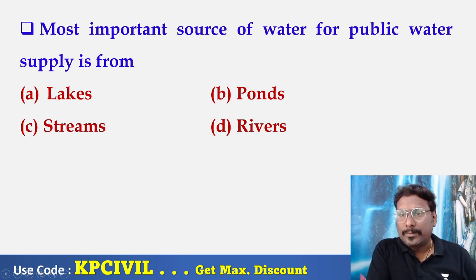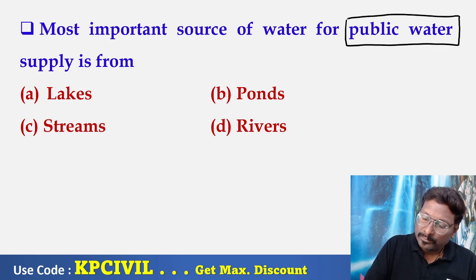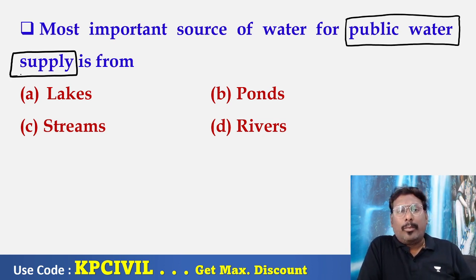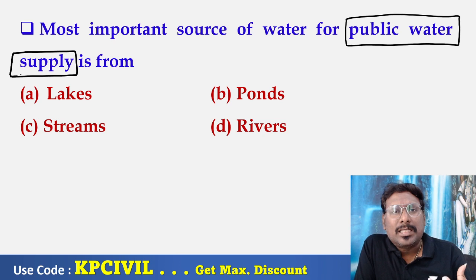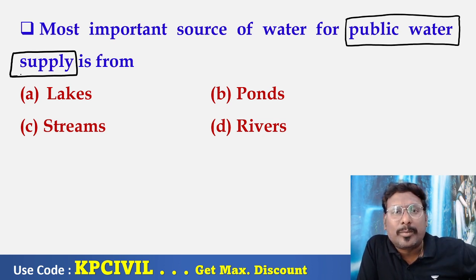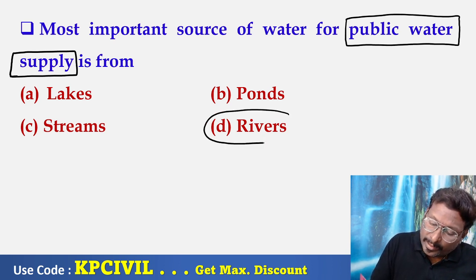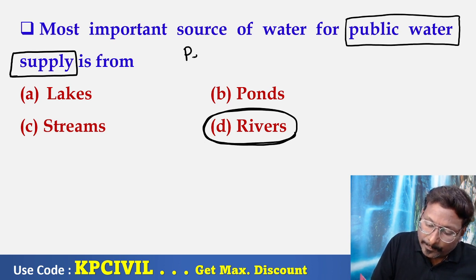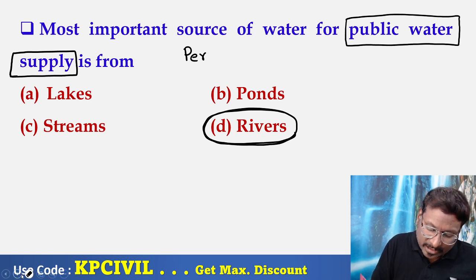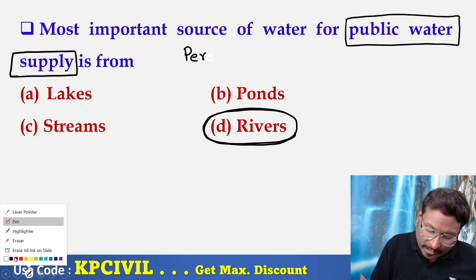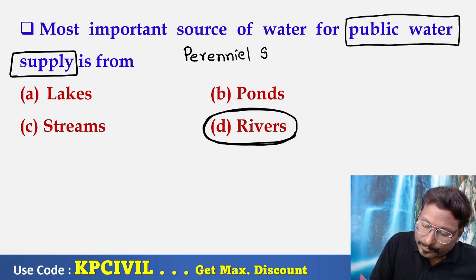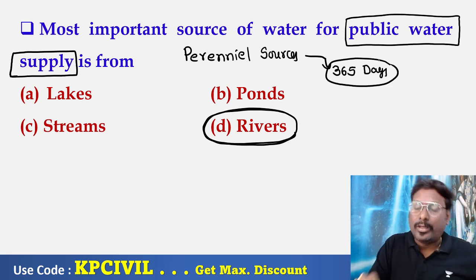The most important source of water for public water supply — public water supply needs a huge quantity because a city or town consists of lakhs and crores of population, requiring several million liters — more than 100 to 200 million liters. Along with quantity, the source must be perennial, because public water requirement is throughout 365 days. So the river is the best source which can provide water throughout 365 days.